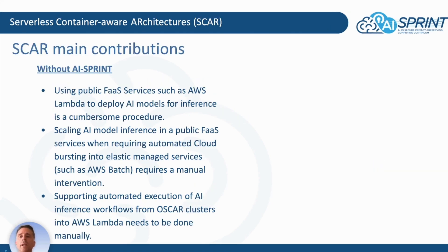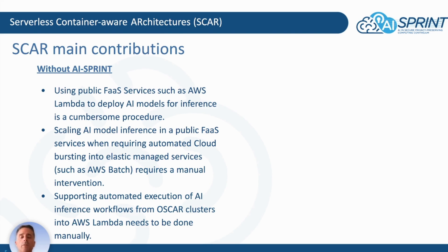Without AI Sprint, using public FaaS services such as AWS Lambda to deploy AI models for inference is a really complex procedure. Scaling AI model inference in public FaaS services, especially when requiring automatic cloud bursting into elastic managed services such as AWS Batch, typically requires manual intervention to pre-provision virtual machines and configure elasticity rules. Supporting automated execution of inference workflows delegating from OSCAR clusters into AWS Lambda also needs to be done manually.